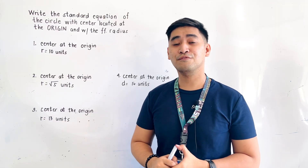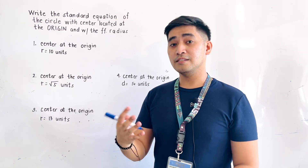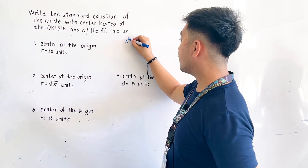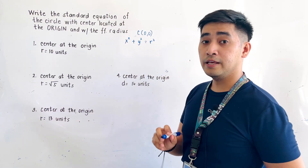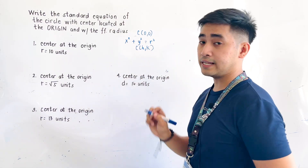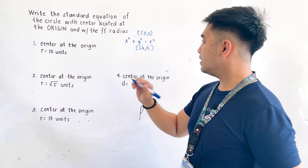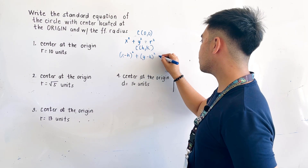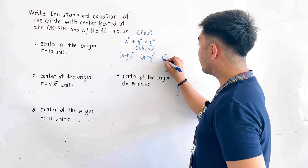Before we discuss our lesson for today, let us first recall the equations of the circle. If the center of the circle is located at the origin, the standard equation would be x squared plus y squared is equal to r squared. If the center is located at point (h, k), where h is the x-coordinate and k is the y-coordinate of the center, the equation becomes x minus h quantity squared plus y minus k quantity squared is equal to r squared, where r is the radius.